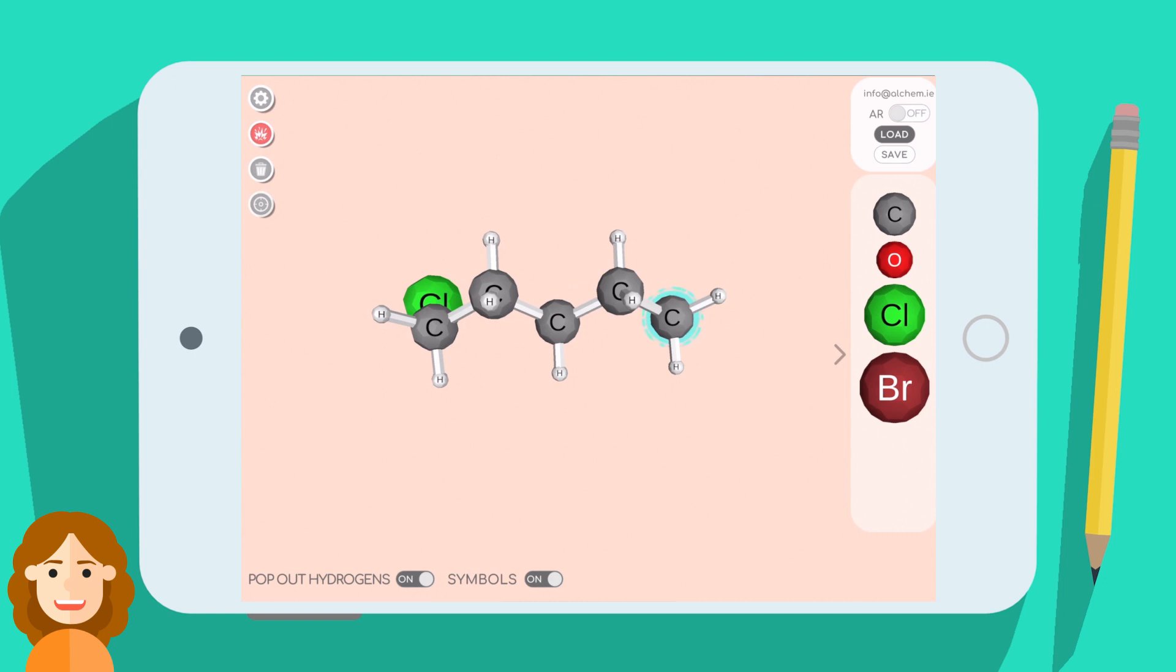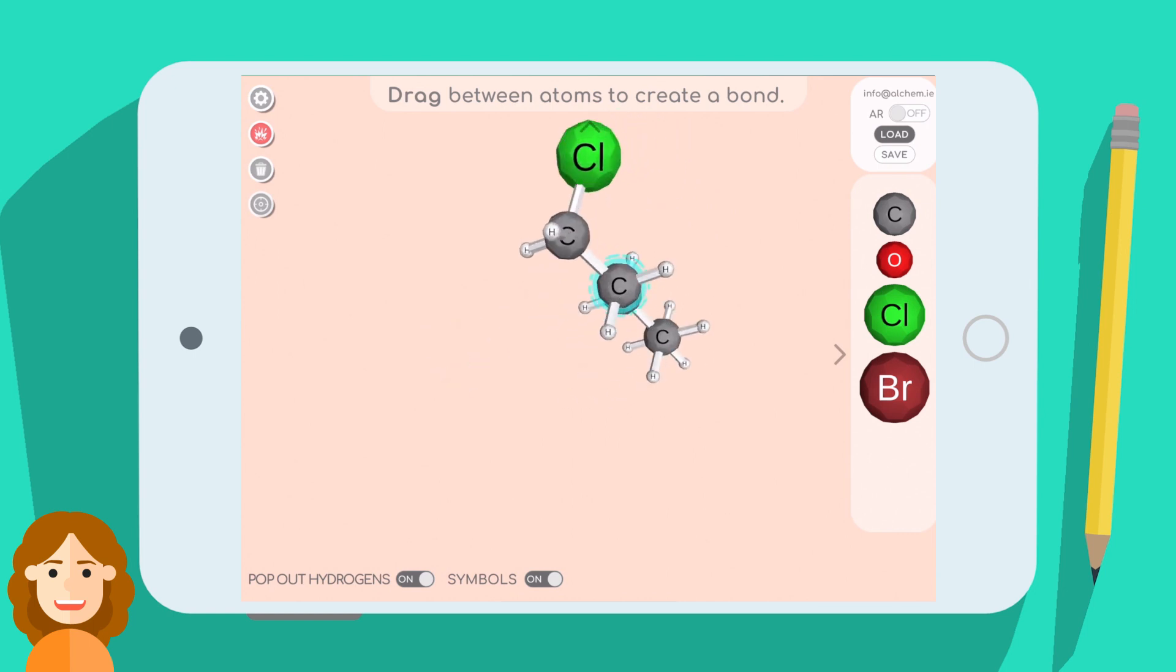The geometry is best seen by rotating the molecule. This is done by dragging your finger on the screen, or by selecting an atom first, then dragging to rotate the molecule around that specific atom.